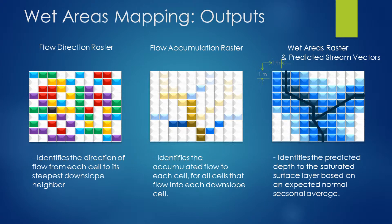First off is a flow direction raster. At one meter resolution, this raster defines the direction of flow — any of the eight cardinal directions — for each cell, indicating which neighbor cell the flow would go into. That information can then be used to summarize all these flow directions into what's called a flow accumulation raster, which is essentially an accumulated flow of all upstream cells, keeping a running tally of how many upstream cells exist relative to any other cell in the landscape.